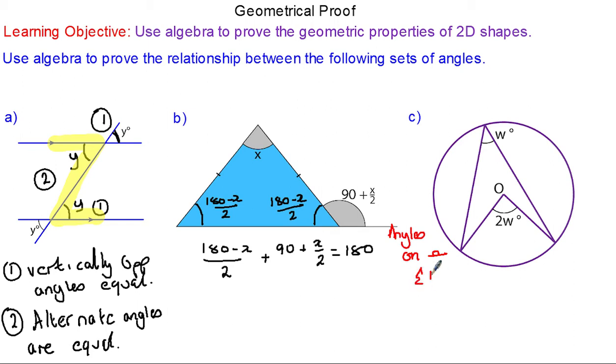That's the greek letter sigma for total. We can simplify 180 minus x over 2 by dividing both by 2 so 90 minus x over 2 plus the gray angle 90 plus x over 2 equals 180. The x over 2's will cancel and the 90's will add together to make 180. So 180 does add up to make 180.